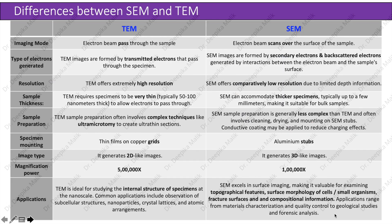The next slide shows the major differences between SEM and TEM. Imaging mode: in TEM, the electron beam passes through the sample; in SEM, the electron beam scans over the surface. Type of electrons: TEM images are formed by transmitted electrons, whereas SEM images are formed by secondary and backscattered electrons. Resolution: TEM offers extremely high resolution, whereas SEM offers comparatively lower resolution due to limited depth information. Sample thickness: TEM requires specimens to be very thin — typically 50 to 100 nm — while SEM can accommodate thicker specimens, typically up to a few millimeters, making it suitable for bulk samples.